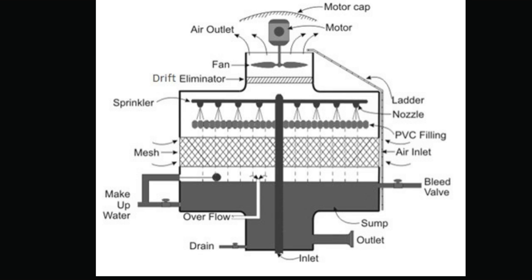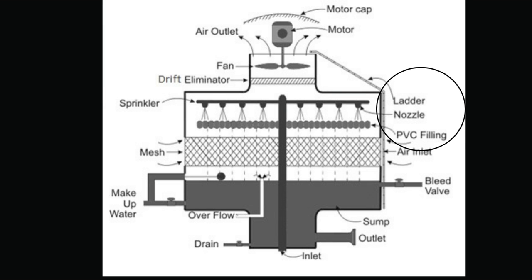Louvers: generally, cross-flow towers have inlet louvers. The purpose of louvers is to equalize air flow into the fill and retain the water within the tower. Many counter-flow tower designs do not require louvers. Nozzles provide the water sprays to wet the fill. Uniform water distribution at the top of the fill is essential to achieve proper wetting of the entire fill surface. Nozzles can be fixed in place with round or square spray patterns, or can be part of a rotating assembly as found in some circular cross-section towers.